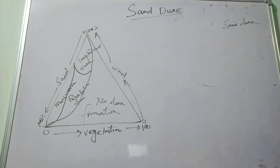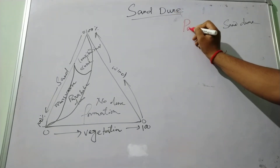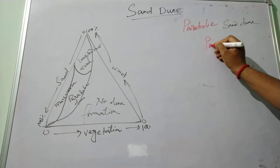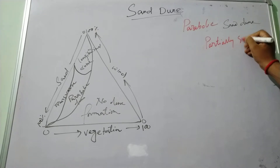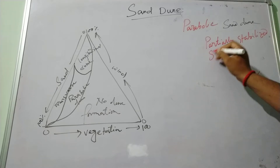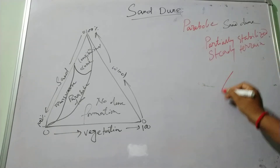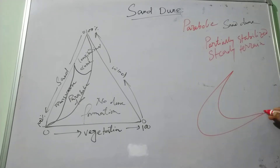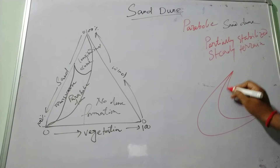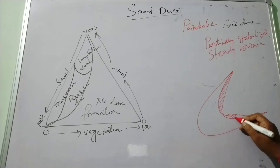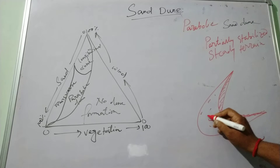Next, we come to the parabolic dunes. The parabolic dunes are developed on partially stabilized sandy terrain. These are associated with some vegetation cover and are known as parabolic dunes.